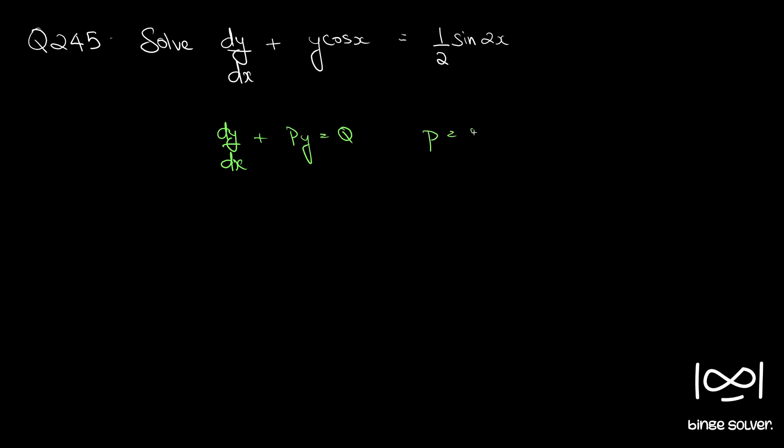P is here, P equal to cos x, and Q equal to sin 2x by 2. Both P and Q are functions of x alone.